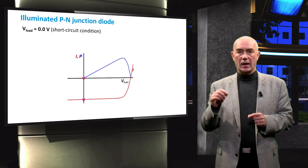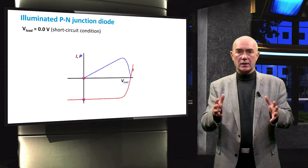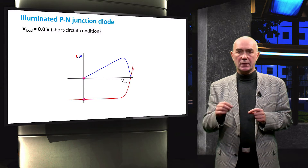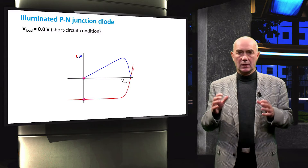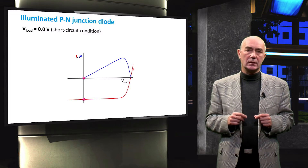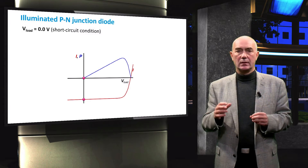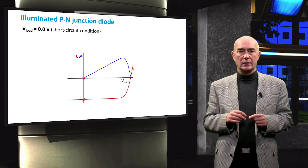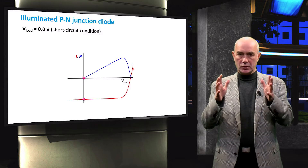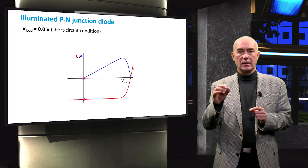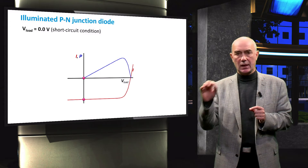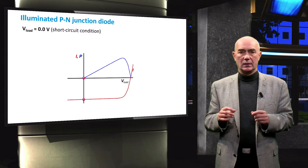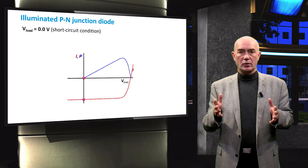Here you see an IV curve of an illuminated diode. We shall use this figure to show some examples of the operating points. The operating point is indicated by a red circle. We shall describe this curve in more detail in the next video, but for now you can just accept that the PN junction diode under illumination has an IV characteristic as shown in this slide. In the plot we also show power delivered by the solar cell, calculated as the product of the current and voltage. The first operating point is at zero voltage drop at the load — this situation is known as the short circuit condition.